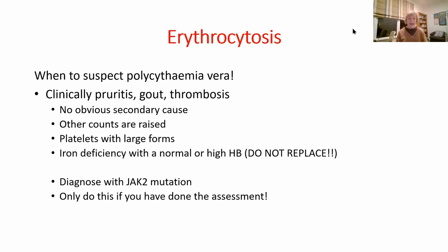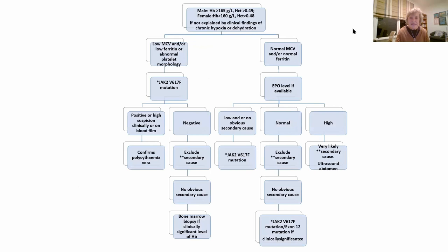The JAK2 V617F mutation is our shortcut — we used to do bone marrows on all these patients, but now a positive JAK2 mutation and you're done. If they're not obviously PV, I have a little algorithm with two reflex tests: JAK2 mutation and erythropoietin level. I won't go through the algorithm in detail but you can screenshot it — the PowerPoint will be circulated. These aren't from a textbook; I've done them myself, and hopefully as you get more excited about high haemoglobins you can have a play.